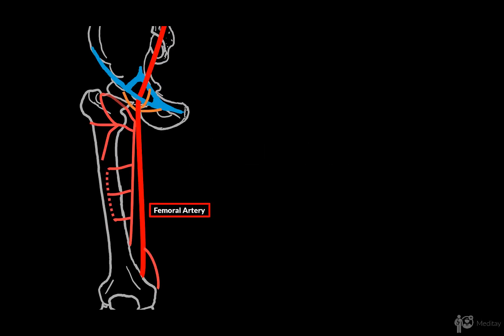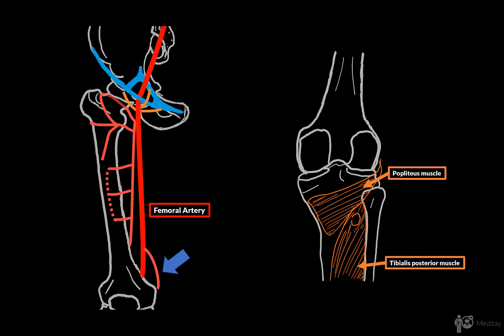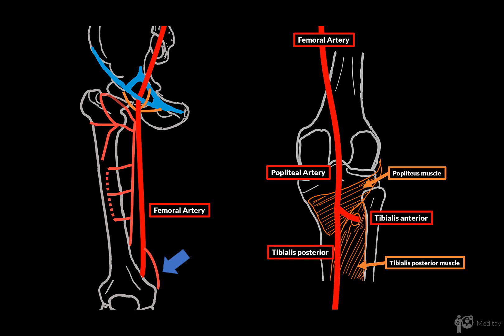The popliteal artery is a direct continuation of the femoral artery. If we now follow the femoral artery and look from this perspective behind the knee, you will see that the artery runs very superficially through the popliteal fossa to the popliteal muscle, where it ends by dividing into two terminal branches: the anterior and the posterior tibial arteries.